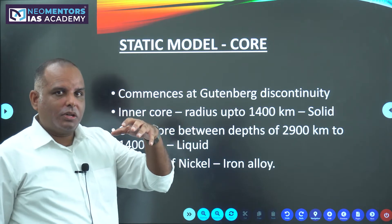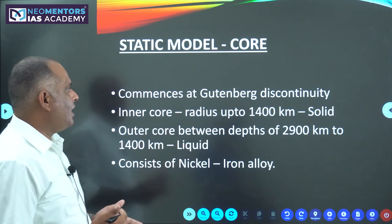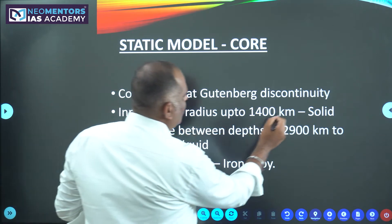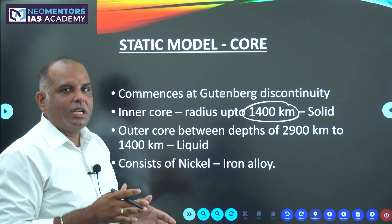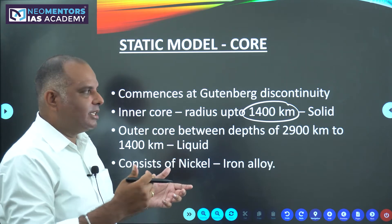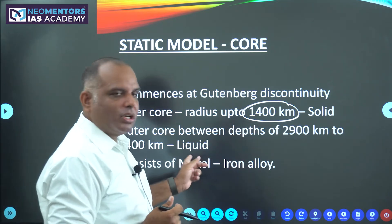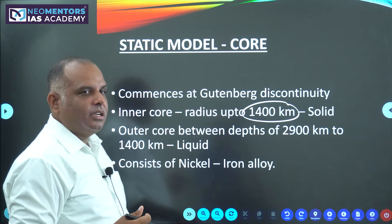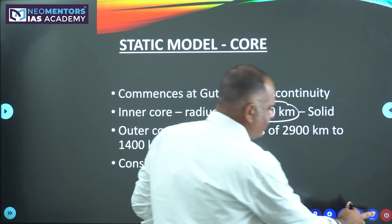Now, the core. Core is made up of the denser material. Inner core up to 1,400 kilometers — it is solid. The outer core is in liquid state. It consists of a nickel and iron alloy.